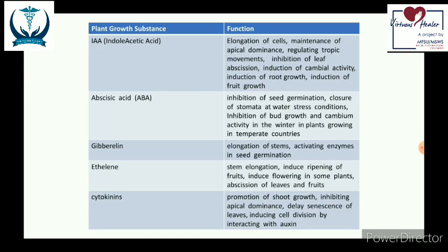The commonest plant growth substance is indoleacetic acid, a type of auxin. It is mainly responsible for induction of growth — whether root growth or fruit growth — and causes elongation of cells. It also inhibits cambial activity and helps in regulation of apical movements. Key points: it is the commonest auxin, responsible for growth and elongation of cells.